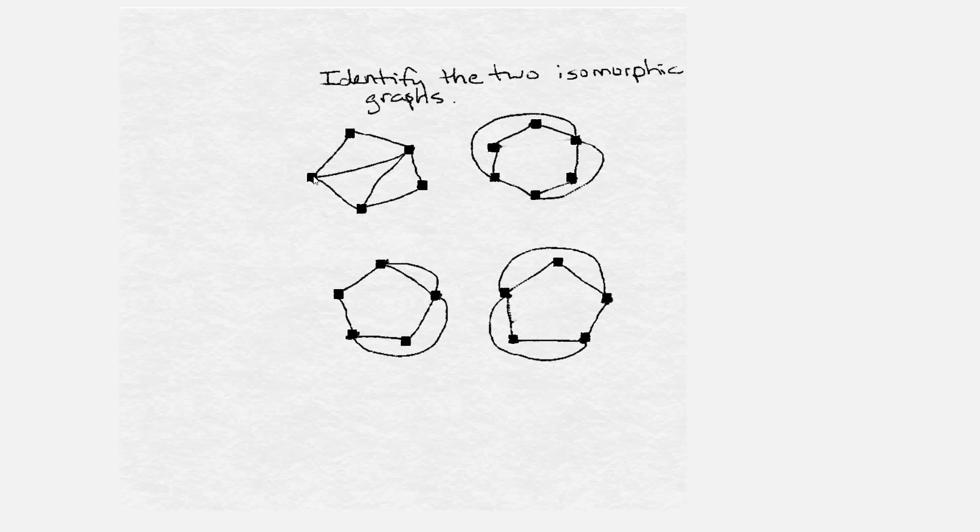In the first graph, we have one, two, three, four, five vertices. In the second graph, we have six vertices. In the third graph, we have five. And in the fourth graph, we also have five.